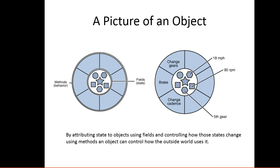Let's think of a picture of an object. This is a picture you might come across if you do some reading online. Inside represents the fields and the outside represents the methods. By attributing a state to an object using fields, you're controlling how these states change using methods, and objects control how the outside world uses it. For example, the bike has a method called change gear, and changing gear is going to change your miles per hour, probably change your RPM, and definitely change your gear.